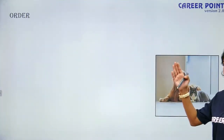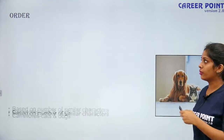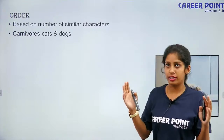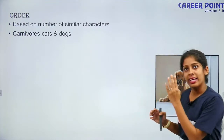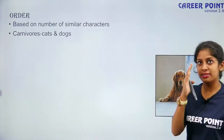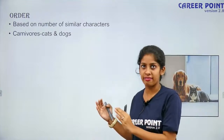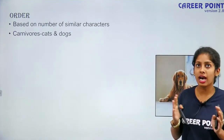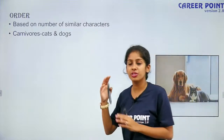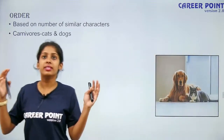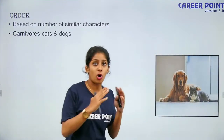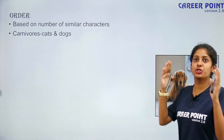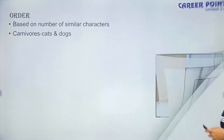Next, another broader term — order. Though cats belong to the cat family Felidae and dogs belong to the canine family, they still come under a broader term called carnivores. Both dogs and cats are carnivores, and they come together under the same order: Carnivora. So order is a much broader term.